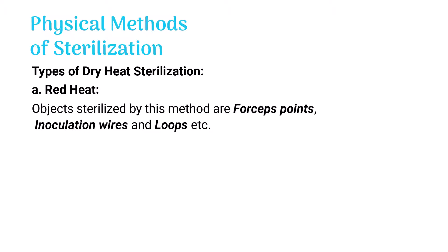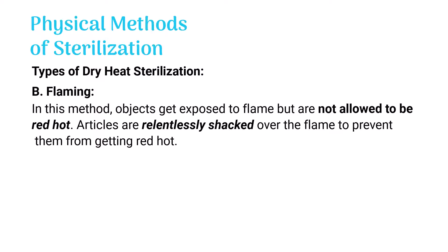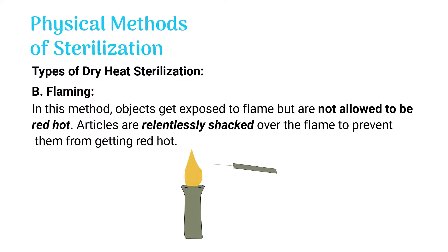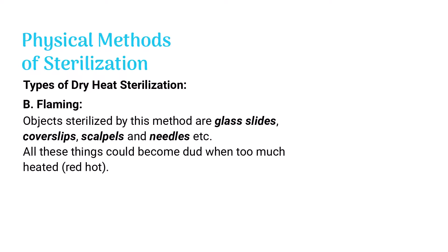Objects sterilized by red heat include forceps, inoculation wires, and loops. In flaming, objects are exposed to flame but are not allowed to become red hot — they are continuously shaken over the flame to prevent this. Objects sterilized by flaming include glass slides, cover slips, scalpels, and needles, though these can become dark if overheated.